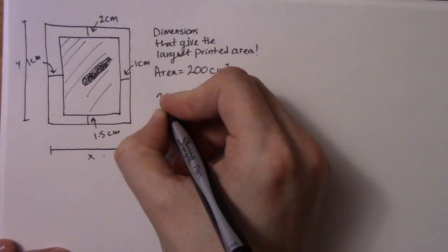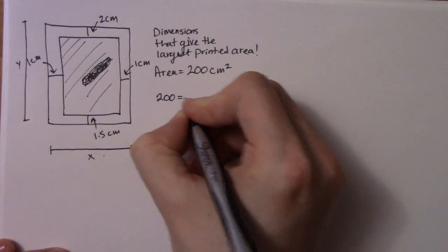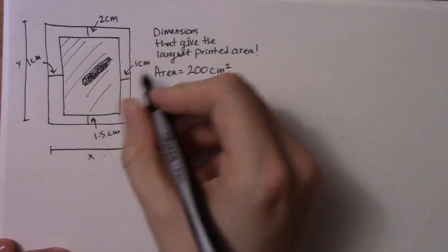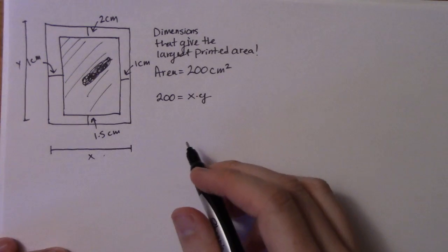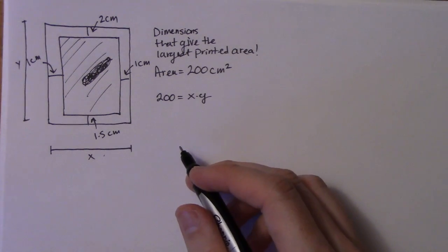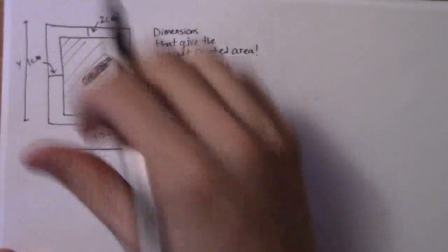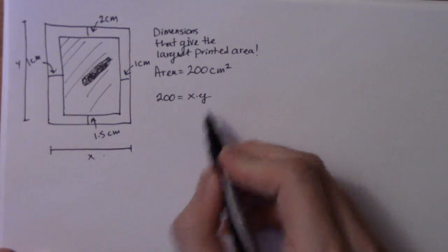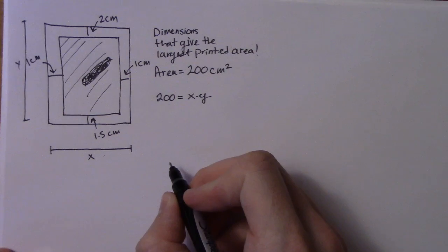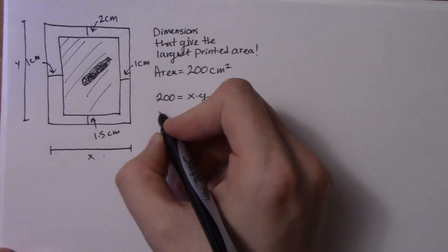So my first formula would be 200 is equal to x times y. If I had said this 200 was in here then it's just like the one I did in class. So I want to make a difference. The one we had in class gave the printed area; this one I got the whole entire area.